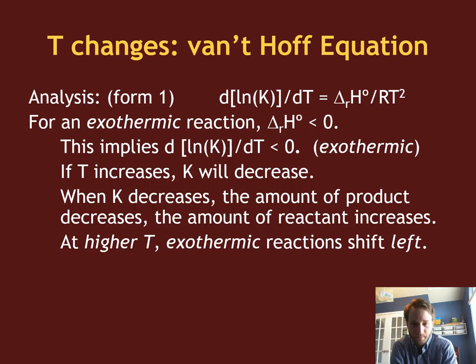Which tells me if temperature increases, K has to decrease, or if temperature decreases, K has to increase. And so if I have a system where K decreases, K is products over reactants, which means more reactants are being formed and less products are being formed.